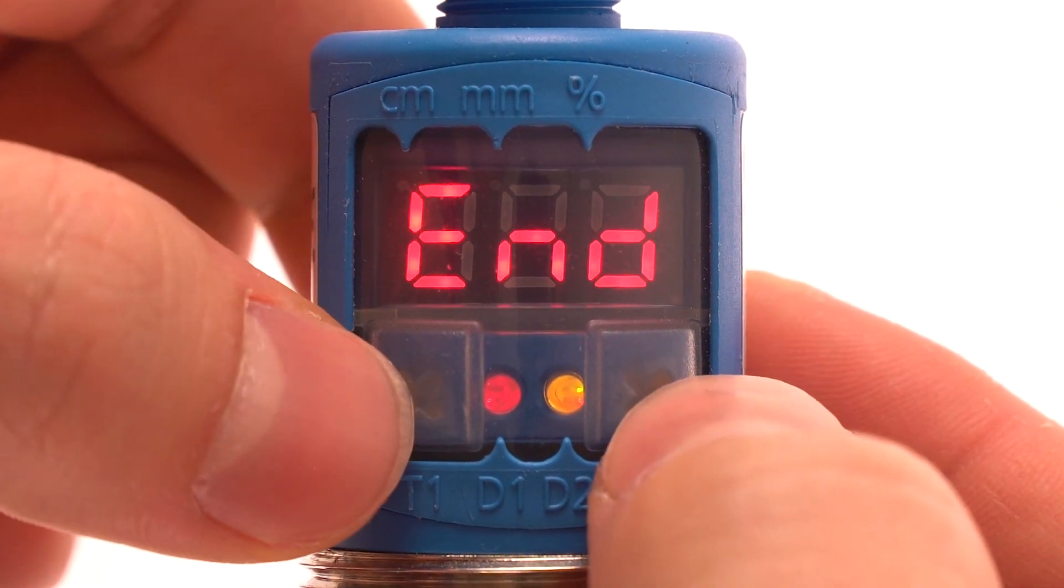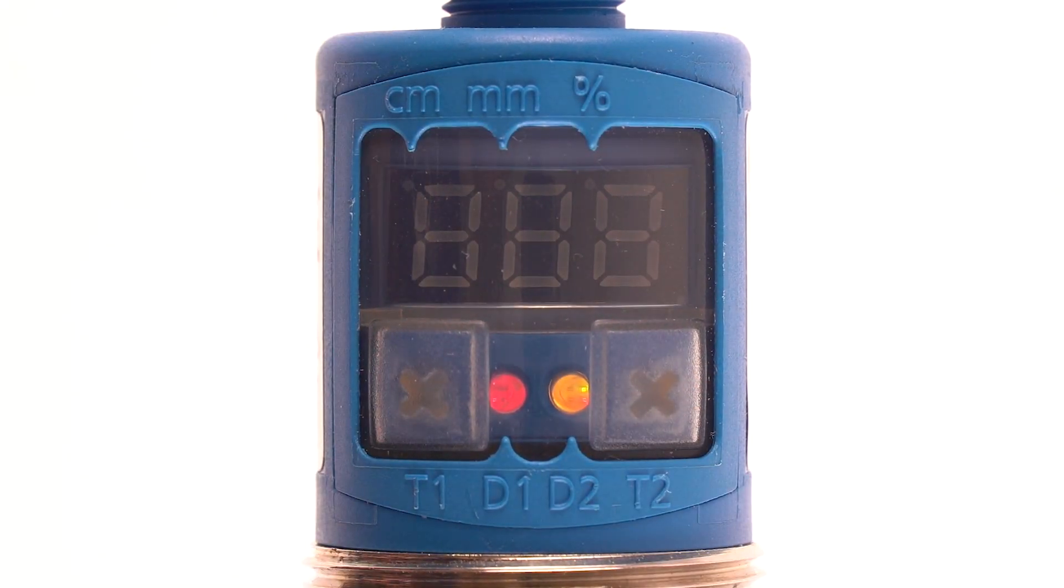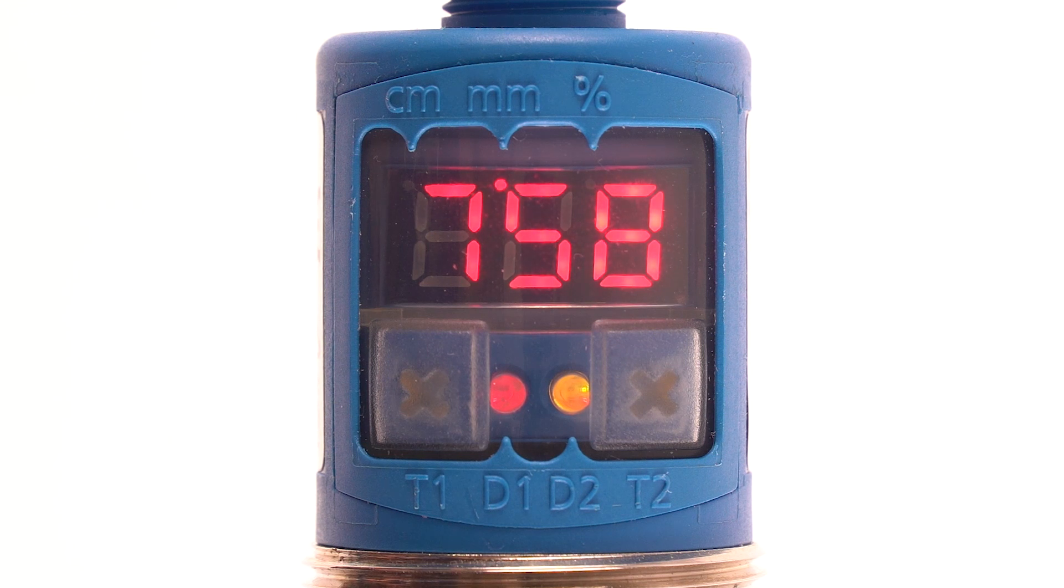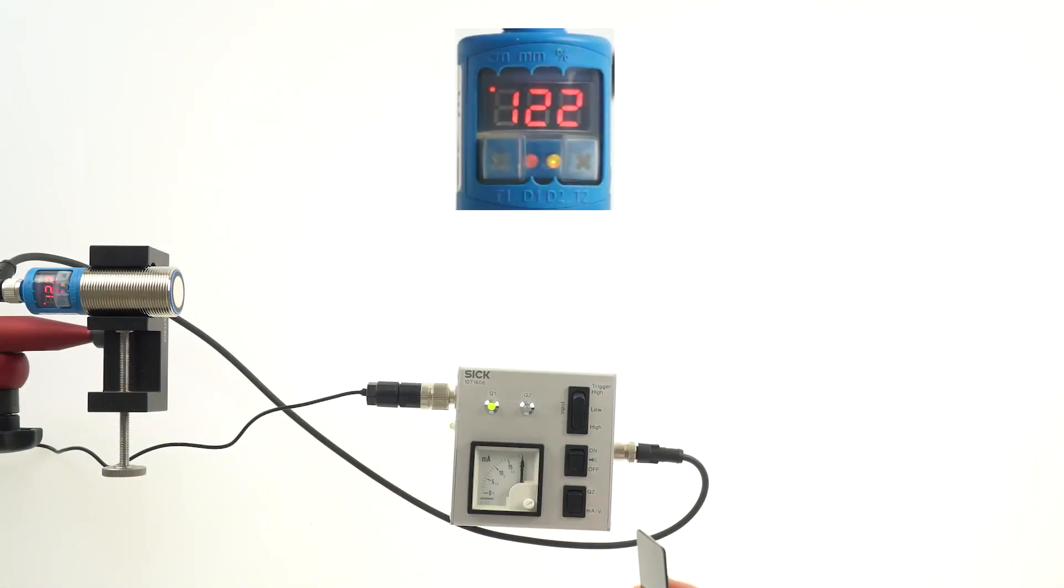To finish, simultaneously press T1 and T2 one more time. Now the analog scaling is saved.